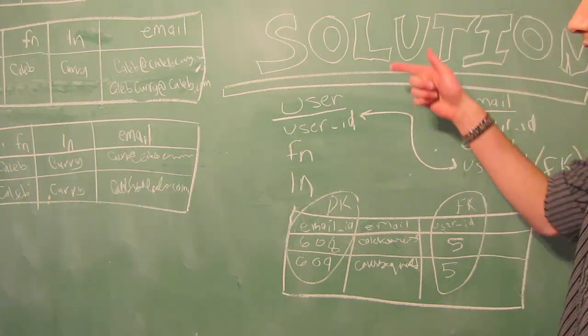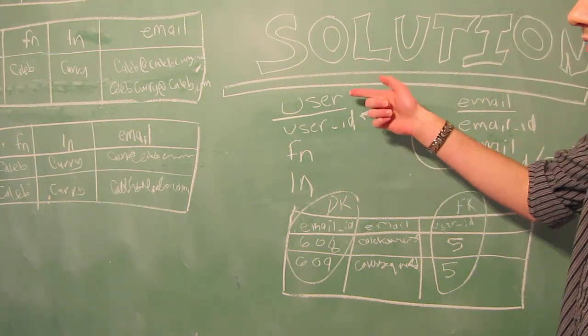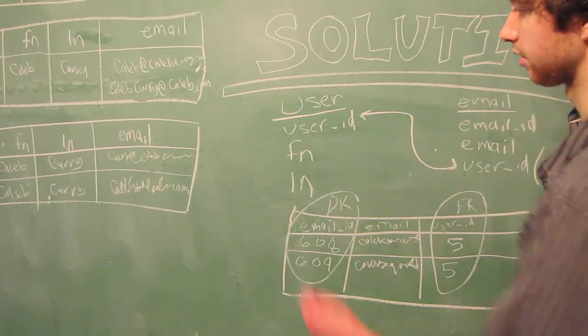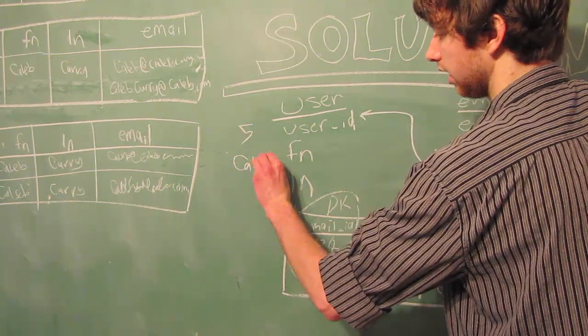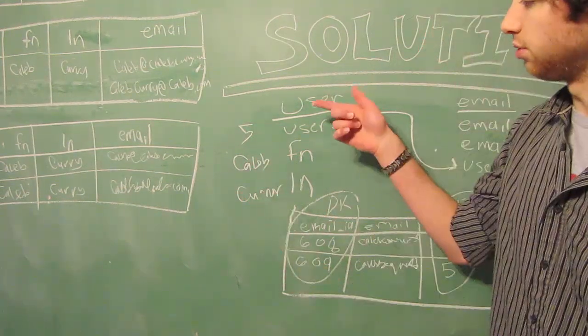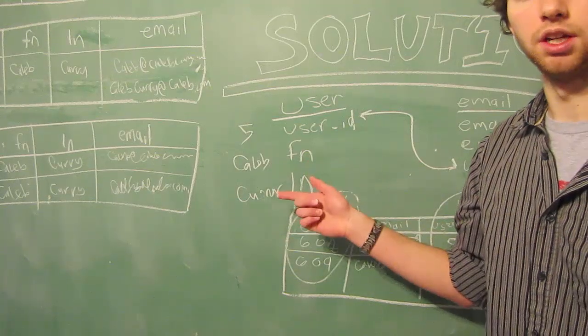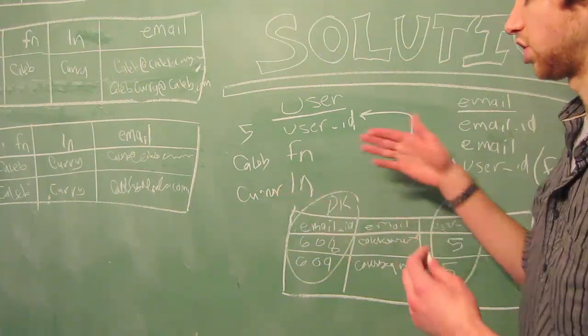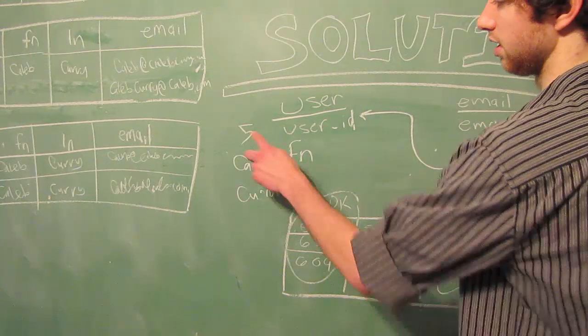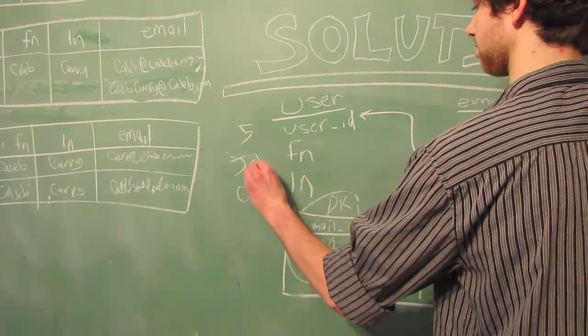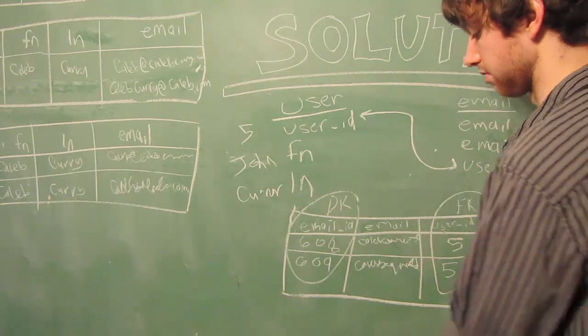Now when we look back at the user table, we don't have any repeating data because we're only going to have a user ID such as 5, first name Caleb, and a last name Curry. And there's no need to make a repeating row because we have all the information we need without having any problems. If we change the name, we would just update this, keep the same ID, change this to whatever we name ourselves or whatever the person names themselves.